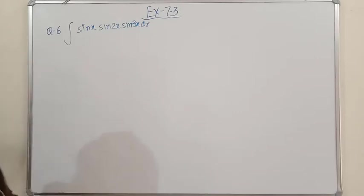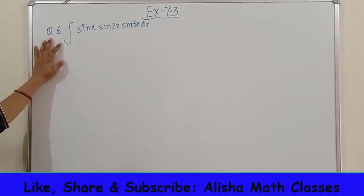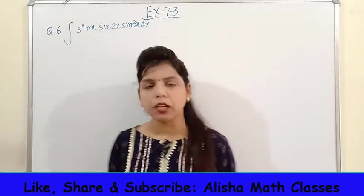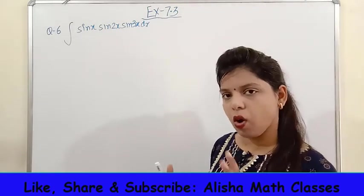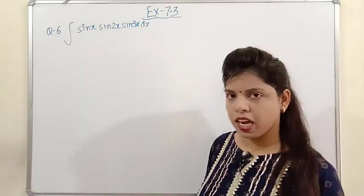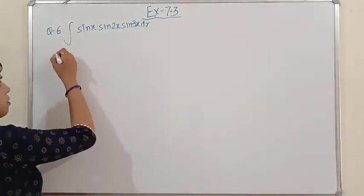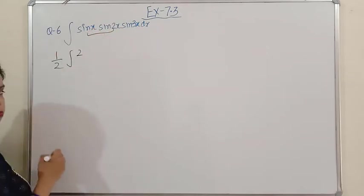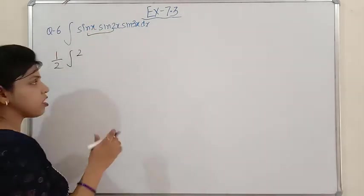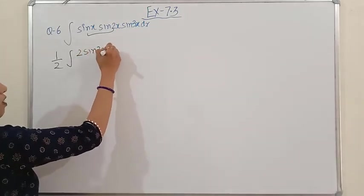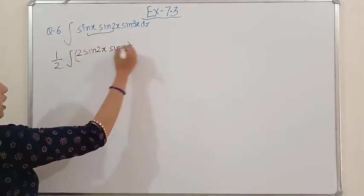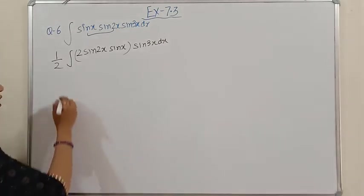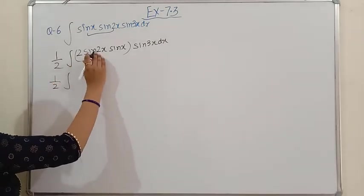Question number 6 is the integration of sinx·sin2x·sin3x dx. This is similar to Question 3 where three terms were in multiplication — there all were cosine, here all are sine. We follow the same steps: multiply and divide by 2, write the bigger angle first (sin2x before sinx) for easier calculation. This gives the form 2sinA·sinB.